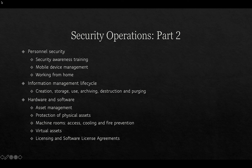Information management lifecycles cover concerns about the creation, storage, use, archiving, destruction, and purging of information — from paper to various media types to digital files. Getting rid of a computer disk may involve destroying it securely, which can include putting SSDs through microwaves or electromagnetic pulse devices for magnetic tapes, as well as shredding chips using commercially available hardware. Hardware and software asset management, protection of assets, controlling access to machines, cooling, and fire prevention are all important.